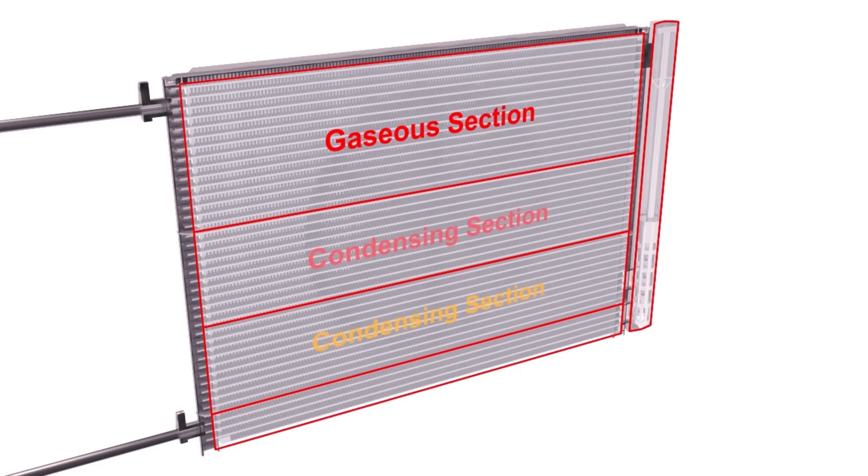a condensing section, a gas liquid separator known as the modulator, and a subcooling section, with the high pressure refrigerant flowing through these four sections in that order.